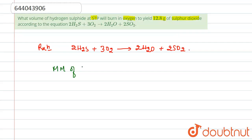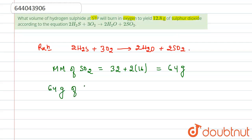The molecular mass of SO₂ equals sulfur 32 plus 2 into 16, which is the molar mass of oxygen, so this equals 64. So 64 grams of SO₂ will be produced at STP.